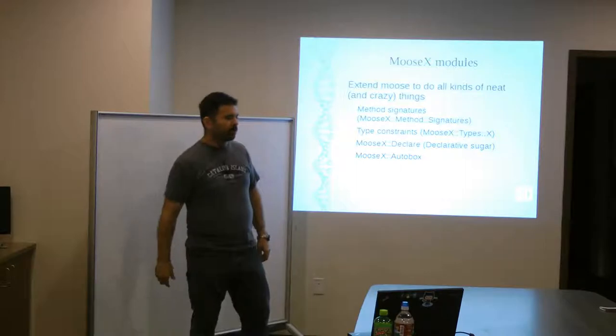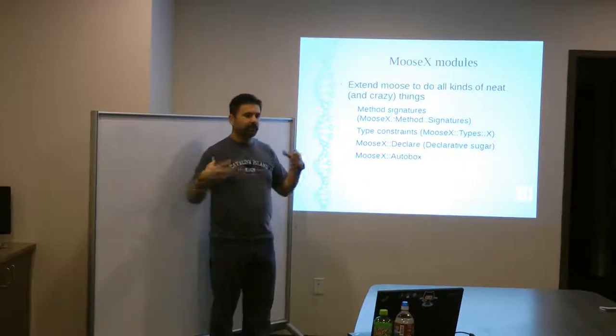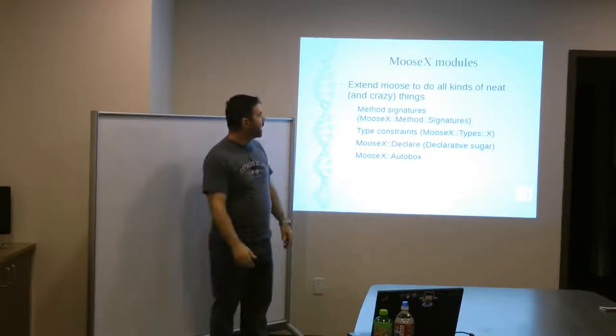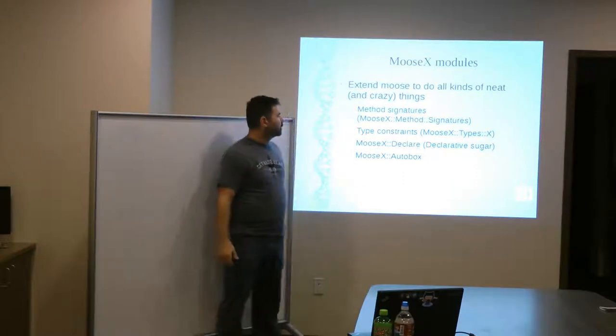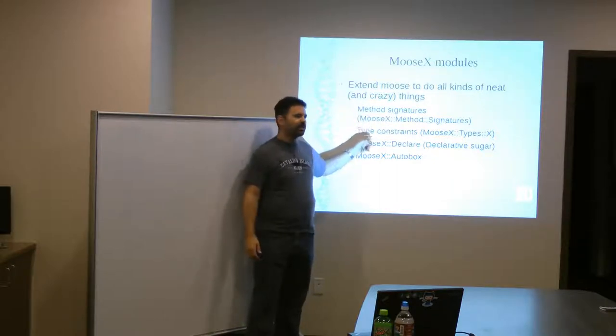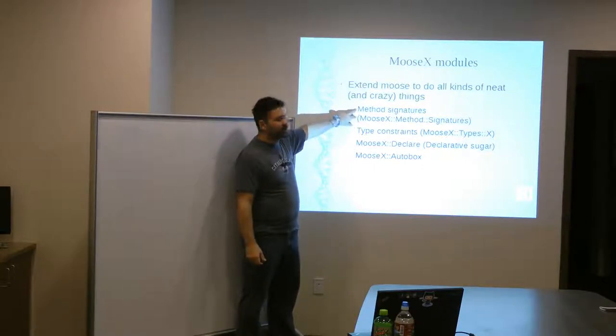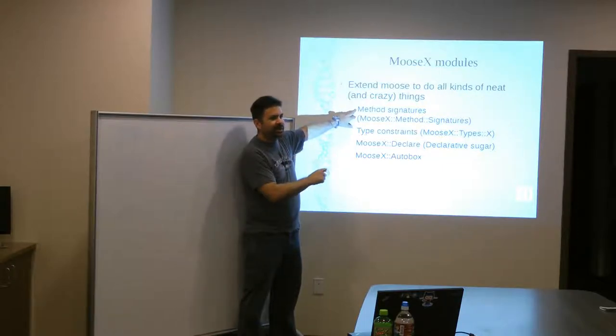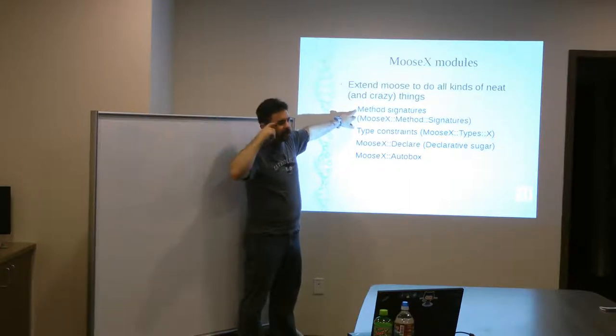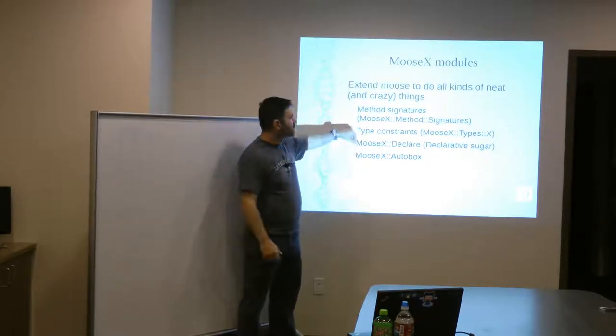And I mentioned just a second ago there are a bunch of modules on CPAN that are in the MooseX namespace. These are all kinds of cool extra things that you can add on to Moose. For one things, method signatures. One of the nice things that method signatures does is it gives you, instead of sub for your methods, you actually have the keyword method. And then you can say, you can have methods that only take certain kinds of parameters. And then, so you can have multiple methods with the same name. And again, Java lets you do this, you know, natively. So you have methods that are the same name, but they behave differently based on what you pass to them.